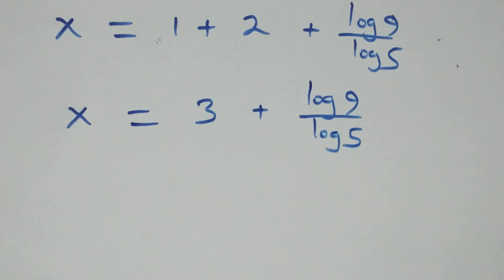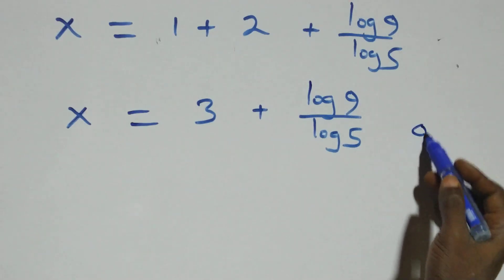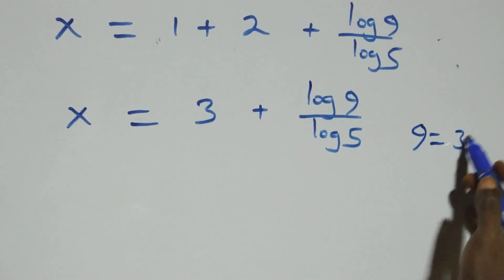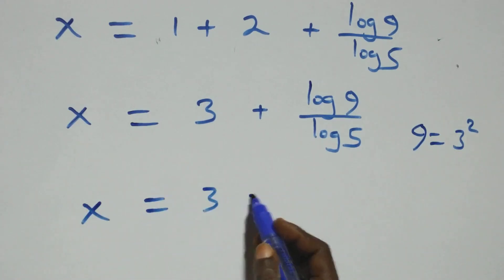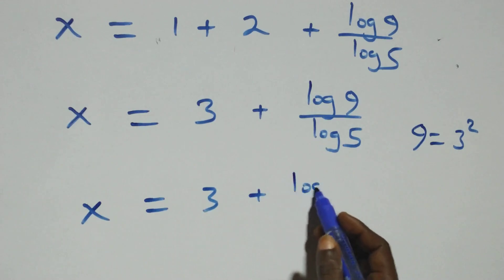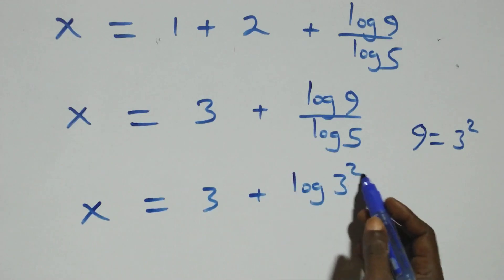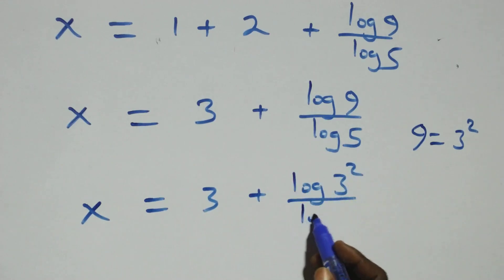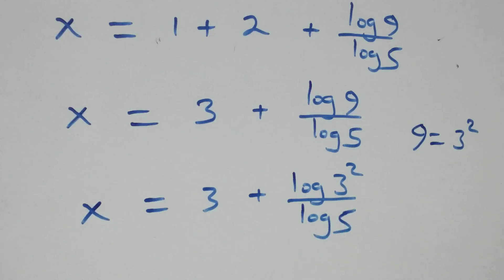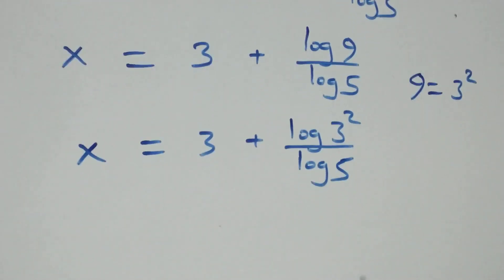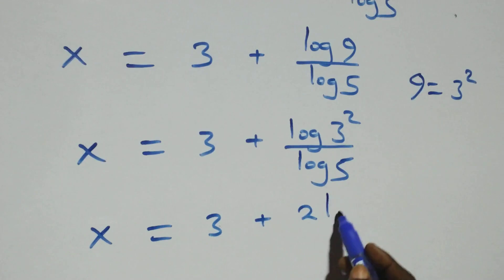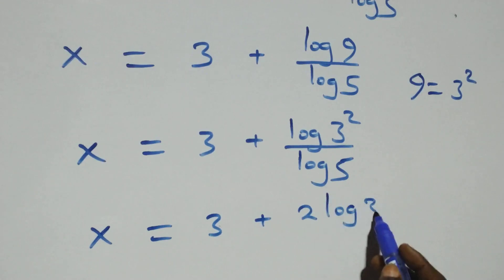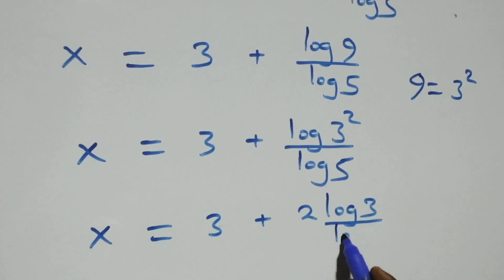Then also from what we have here, we can express 9 as 3 times 3, that is 3 squared. This implies what we have becomes x equals to 3 plus log 3 squared over log 5. Here we apply the power rule — the 2 comes out front — so x equals to 3 plus 2 log 3 over log 5.